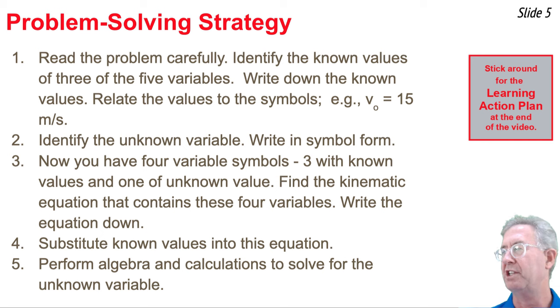So here's a summary of that strategy that we'll be using. First, you read through the problem carefully and you identify the known values of three of the five variables in these equations. You write these known values down and you relate the values to the symbol. For instance, you might say v o equal 15 meters per second. Then you read through the problem a second time and you identify the unknown variable. You write it down in symbol form.